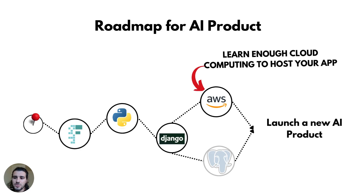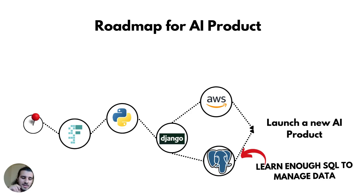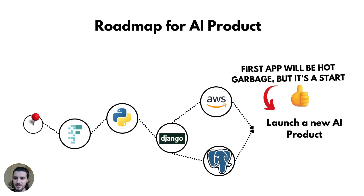Then learn enough cloud computing to host your own app. I put AWS here, but you can go Google Cloud or even Vercel if you're into JavaScript. The whole point is: don't try to put it on your own servers — always put it in the cloud, put the web app there. Finally, learn just enough SQL to manage the in and out of your data. The cool thing with Django is you don't need that much SQL knowledge — there's something called an ORM that will do most of the SQL for you. Launch the thing, show it to family and friends, and you have an AI product or AI feature. It will most likely be hot garbage, but at least you got the first iteration out.